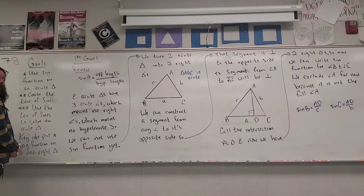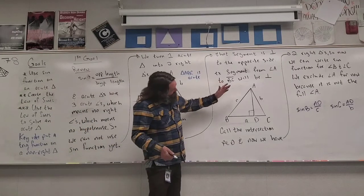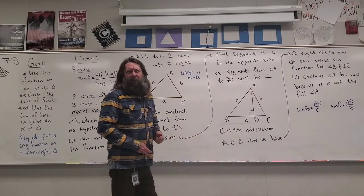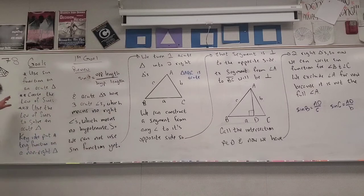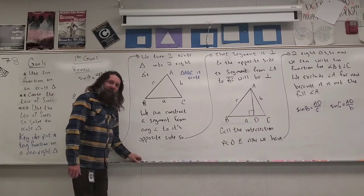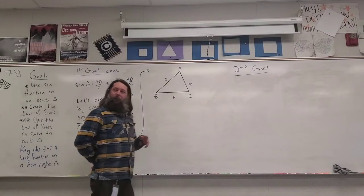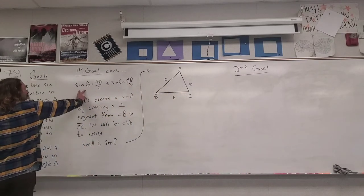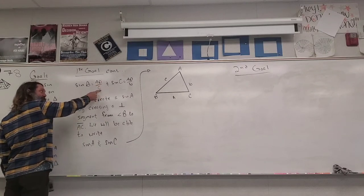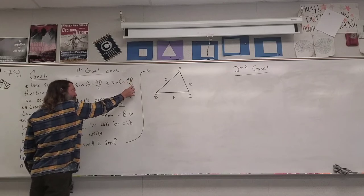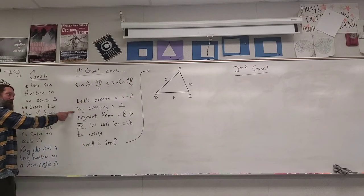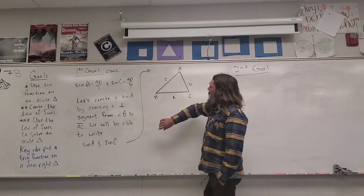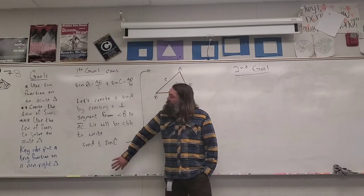Now I'd like to create a sine function for angle A. I'm going to draw a segment off a different angle, and again we're going to have something in common. From there, we'll be able to jump into our second goal — creating the Law of Sines. Let's create sine of angle A by creating a perpendicular segment from angle B to side AC. We'll be able to write sine of angle A as well as sine of angle C again.